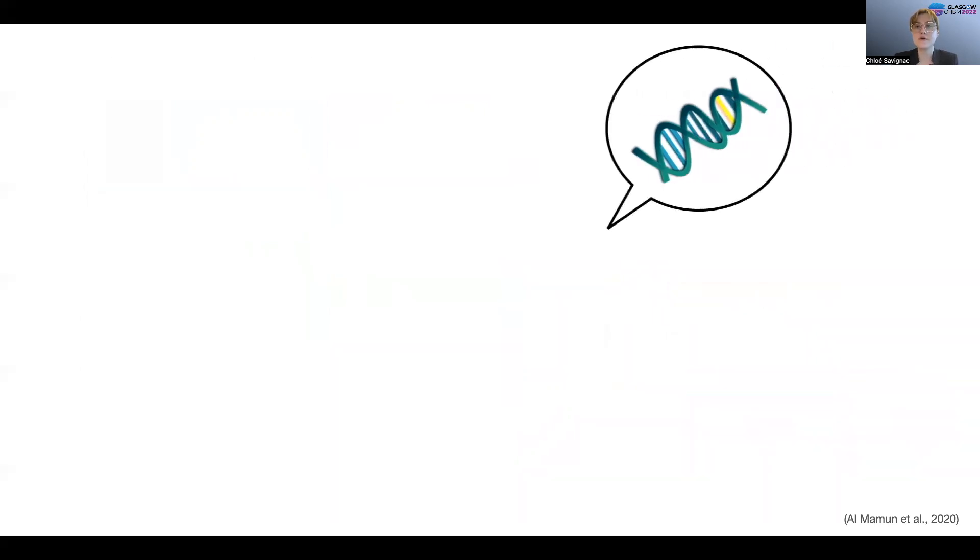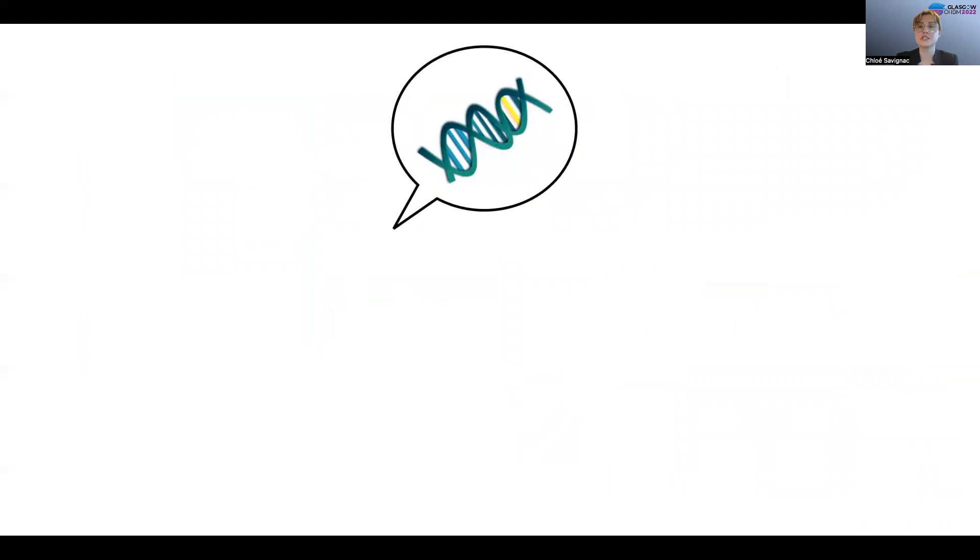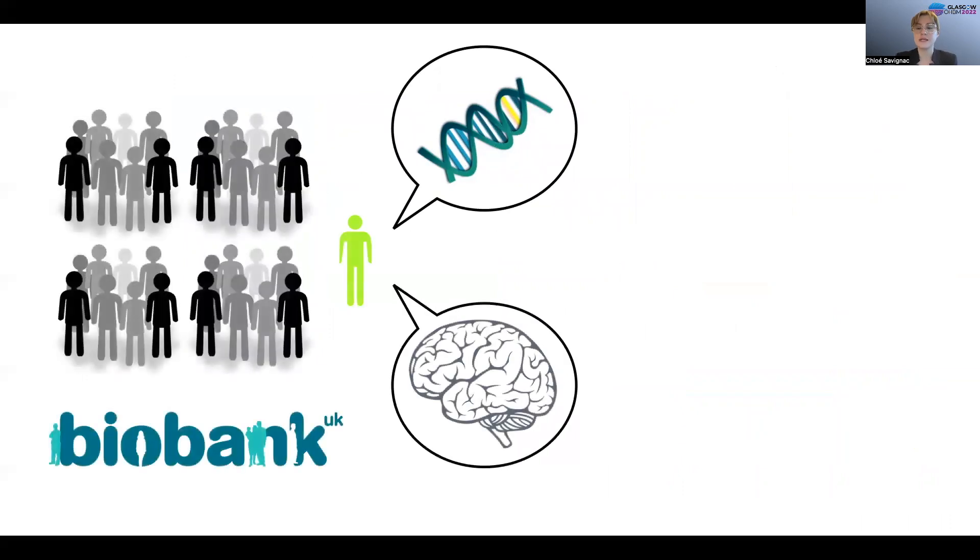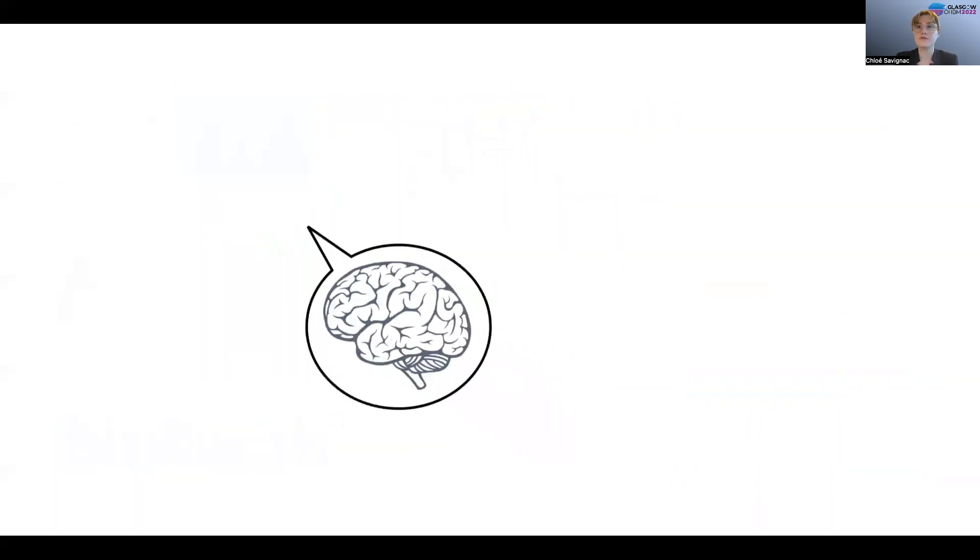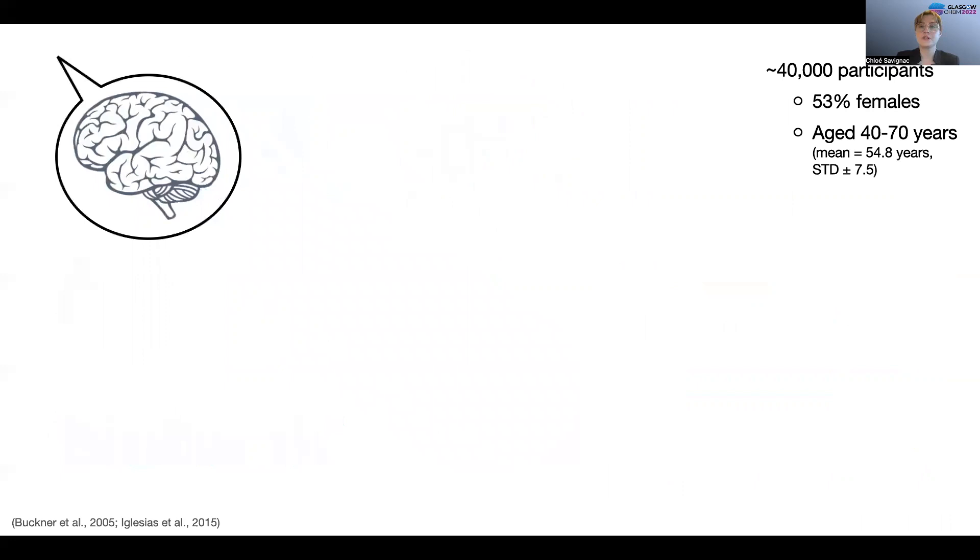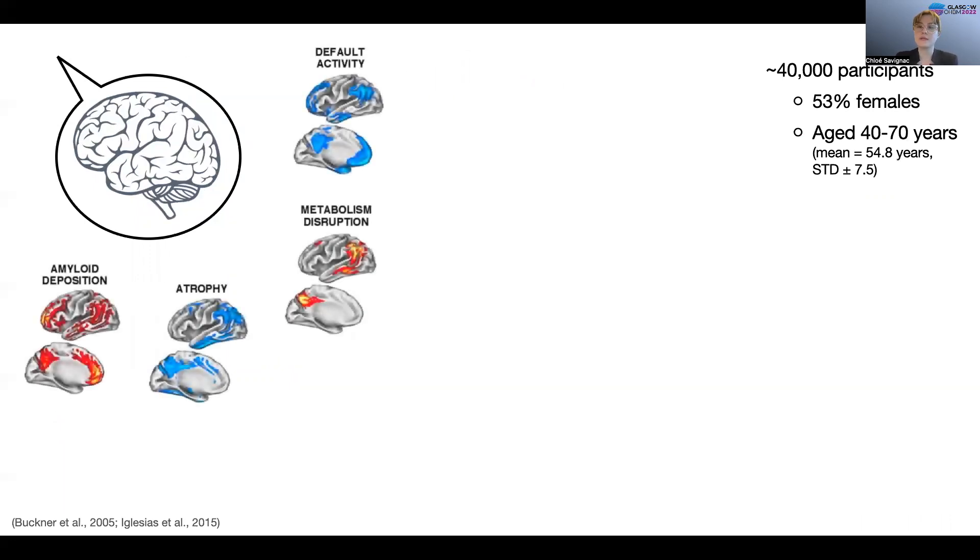We also benefited from expert-curated image-derived phenotypes of gray matter morphology that were extracted from T1-weighted MRI and available from around 40,000 UK Biobank participants. We especially looked at gray matter volumes within neocortical regions of the default network, which we know overlap with metabolic,